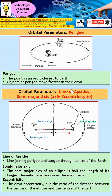Next, I want to quickly establish what is called the line of apsides. The line of apsides is a line that cuts through the apogee, the center of the Earth, and also the perigee. This green line is what we know as the line of apsides.